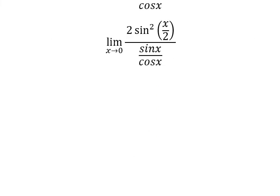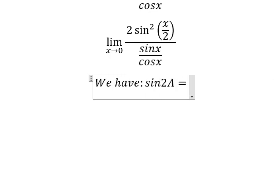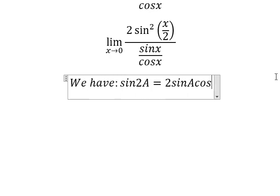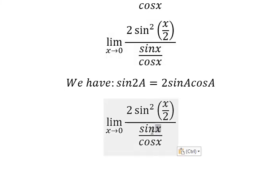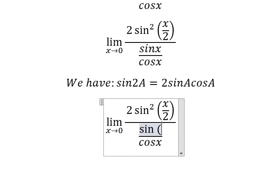Next we have the second formula in here. Sin2A equals 2sinA cosA. So about sinx, that is about sine of 2 multiplied by x/2.